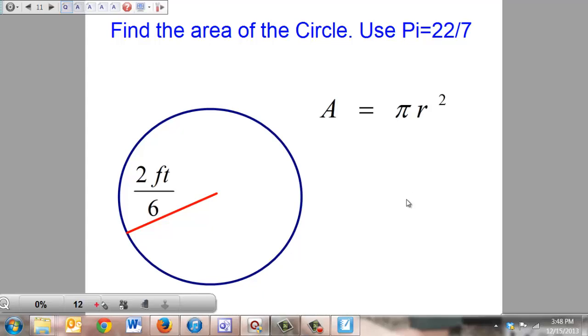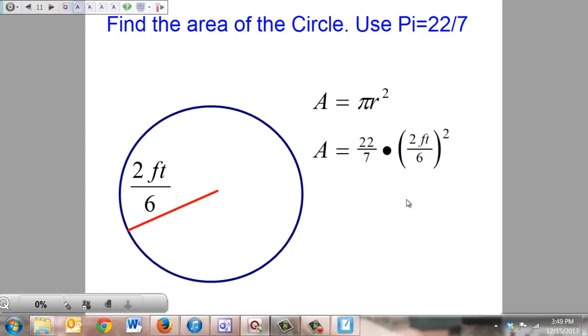Once again, we're using the fractional representation of pi because we have a fraction, 2/6 feet, for our radius. Now if I had a brain in my head, before I did anything here, I would simplify 2/6 to be 1/3. Obviously, I do not have a brain because I chose not to do that.